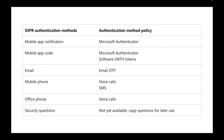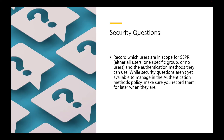In the old SSPR authentication method: mobile app notification becomes Microsoft Authenticator in the new system; mobile app code becomes Microsoft Authenticator software OAuth tokens; email becomes email OTP; mobile phone becomes voice calls and SMS; office phone becomes voice calls; and security questions are not yet available in the new policy - you'll need to record them for later. Record which users are in scope of your SSPR, either all users or a specific group. This video was recorded in January 2024, so keep an eye on when security questions become available.